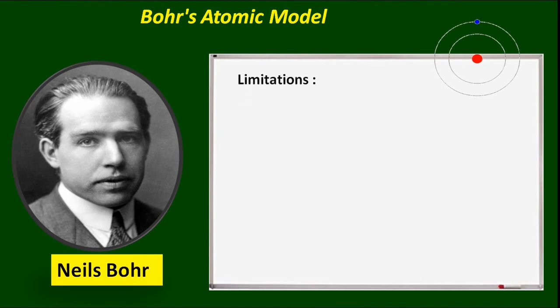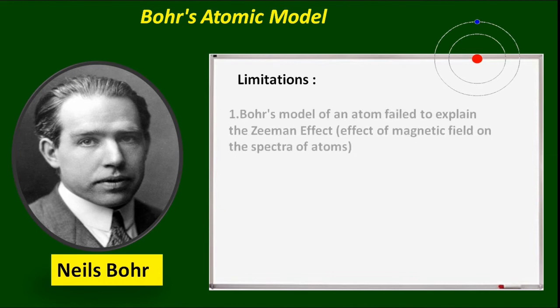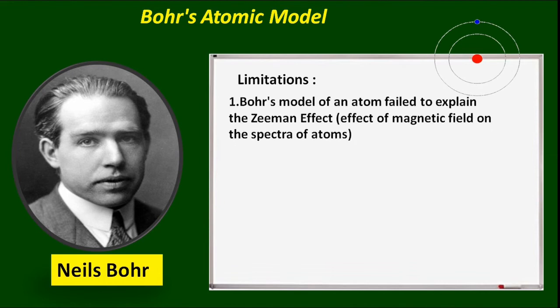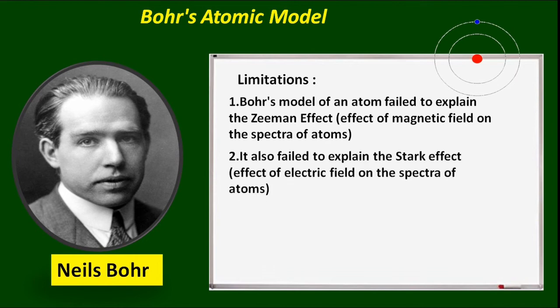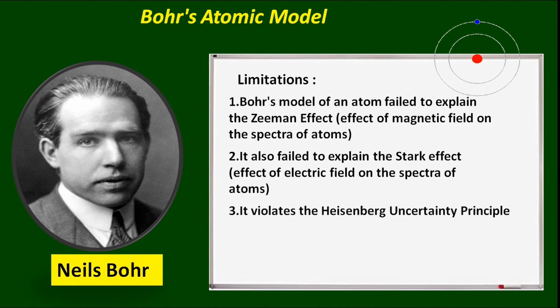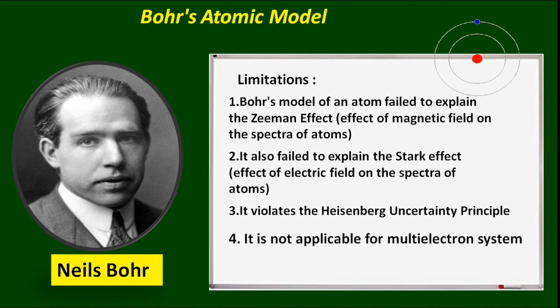Limitations of Bohr's atomic model: Bohr's model failed to explain the Zeeman effect, or the effect of a magnetic field on the spectra of atoms. It also failed to explain the Stark effect, or the effect of an electric field on the spectra of atoms. It violates the Heisenberg uncertainty principle, and it is not applicable for multi-electron systems.